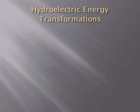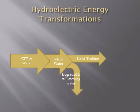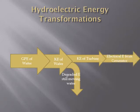You should be able to draw a Sankey diagram showing these energy transformations. We start with gravitational potential energy of the water; as it falls it turns into kinetic energy of the water, which spins the turbine. Some energy goes into the turbine but not all, because some water is still moving. That turbine energy then turns into electrical energy. There is degraded energy because not all kinetic energy goes into the turbine.